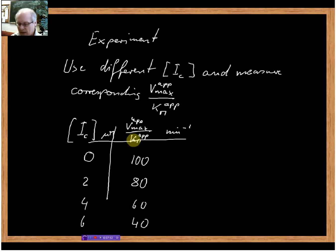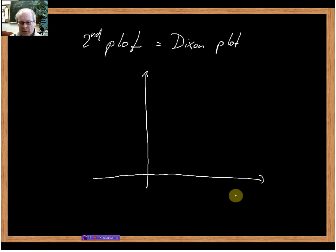What do we do in this case to find out our dissociation constant? We use what is called a secondary plot, also sometimes called a Dixon plot. In this plot, we plot on the x-axis the inhibitor concentration, so we plot IC in micromolar or something like that.